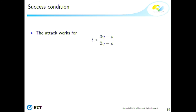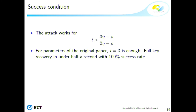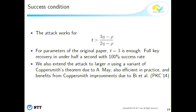For the parameters in the original paper, t = 3 encryptions of zero suffice, so it breaks all instances of the public key scheme. In practice, the attack takes less than half a second with a 100% success rate using a naive implementation. For larger n, one uses the multivariate Coppersmith variant due to Alexander May, and efficiency can be further improved using the Coppersmith computation improvement by Belding et al. at PKC.